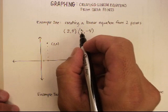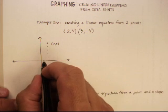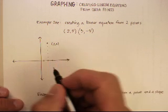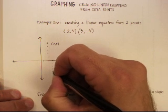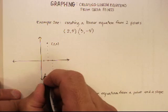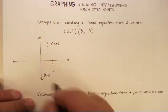I also know the point 3, negative 4. So, let's go 1, 2, 3 along the x, and then 1, 2, 3, negative 4 along the y. So, 3, negative 4.